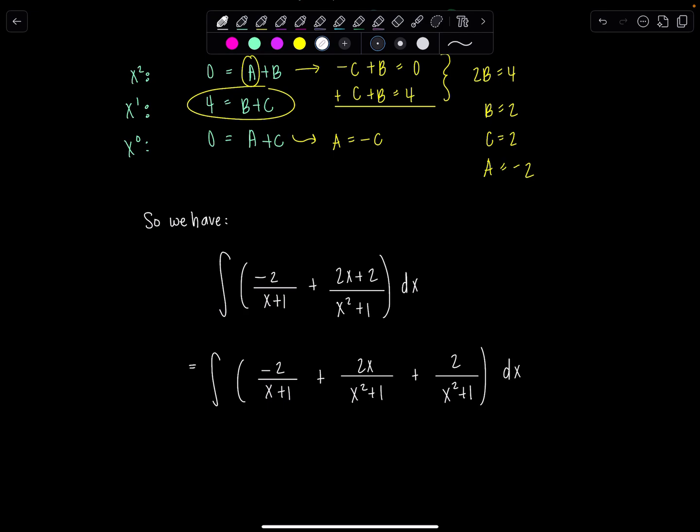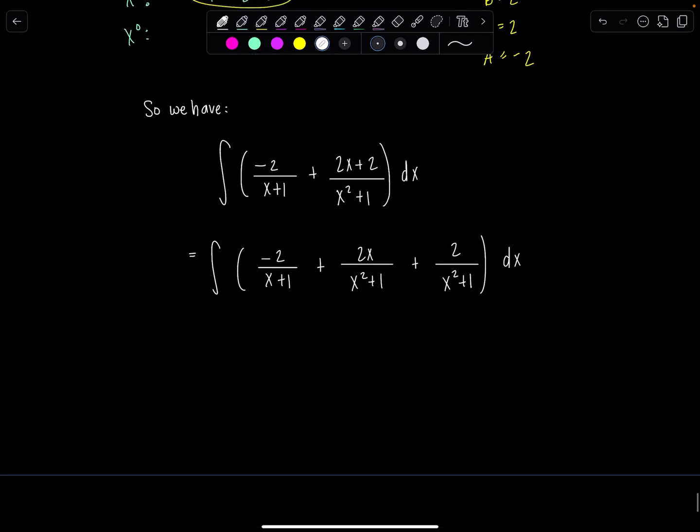And then from here, everything falls into place beautifully. So anti-derivative of negative 2 over x plus 1 is going to be negative 2 natural log absolute value x plus 1 plus, now it's up to you if you need to do the u sub or not for this. I can just kind of do it in my head. And most of you probably can too at this point.